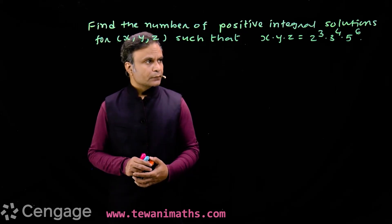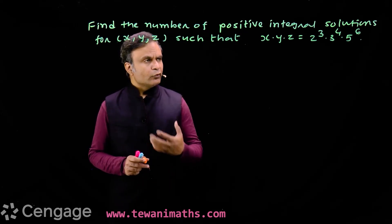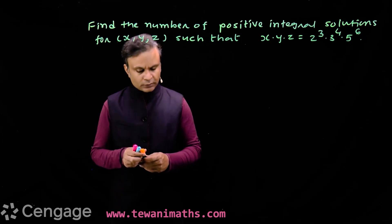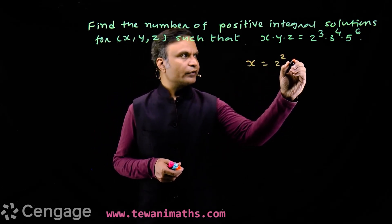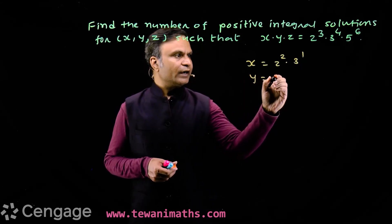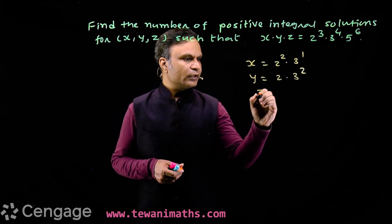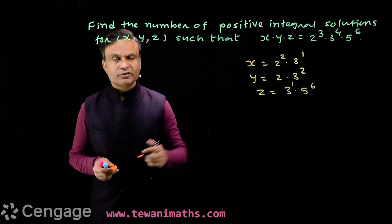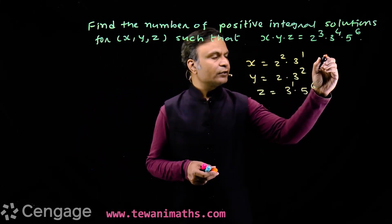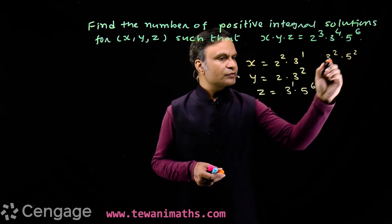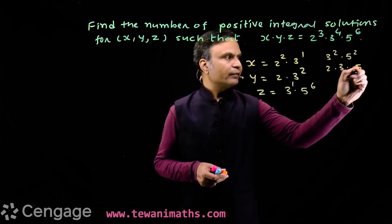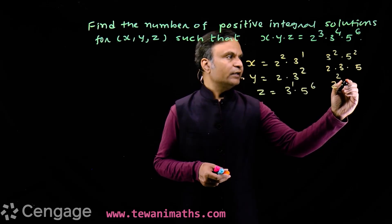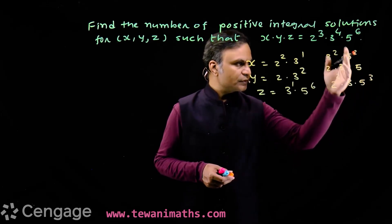What do we mean by positive integral solutions of this equation? For example, we may have x = 2² × 3¹, y = 2 × 3², and z = 3¹ × 5⁶ — this is one solution. Another solution could be x = 3² × 5², y = 2 × 3 × 5, and z = 2² × 3 × 5³. This is another solution.